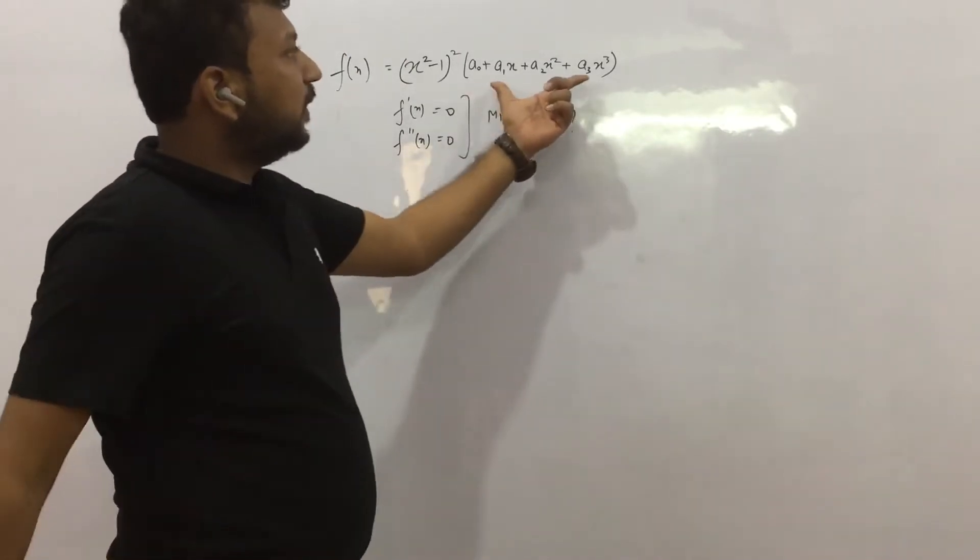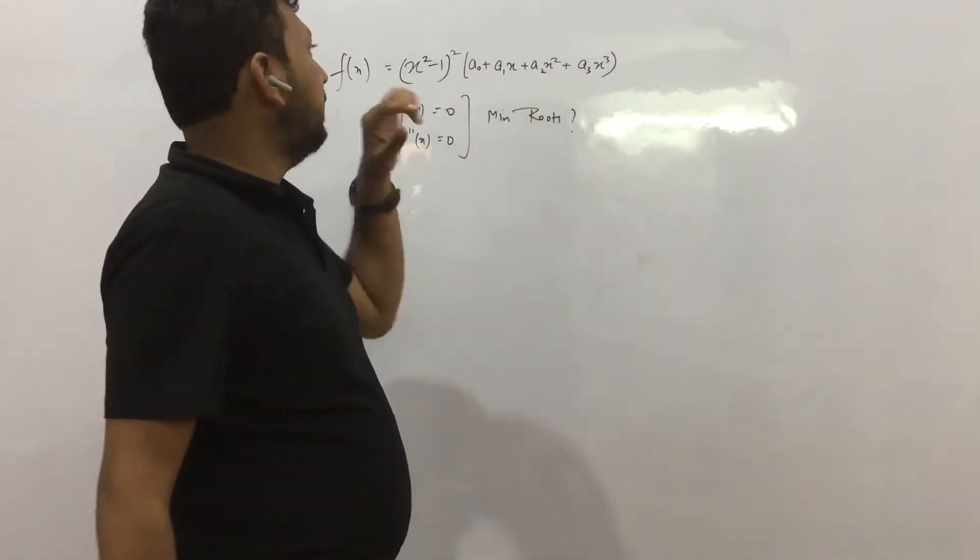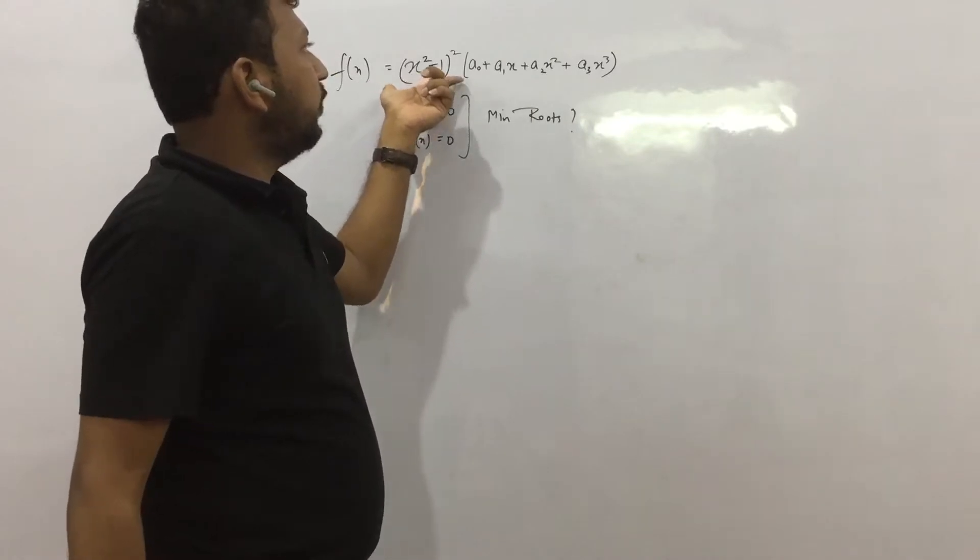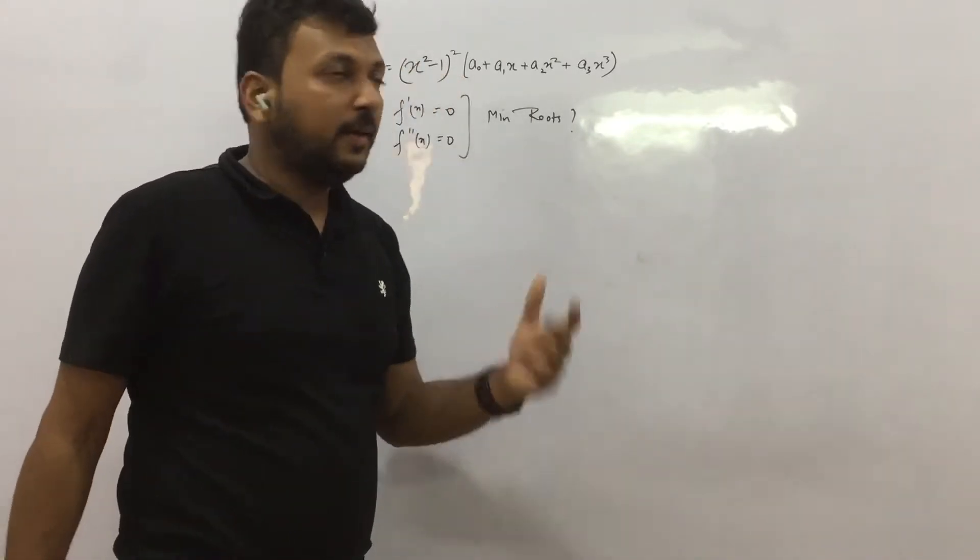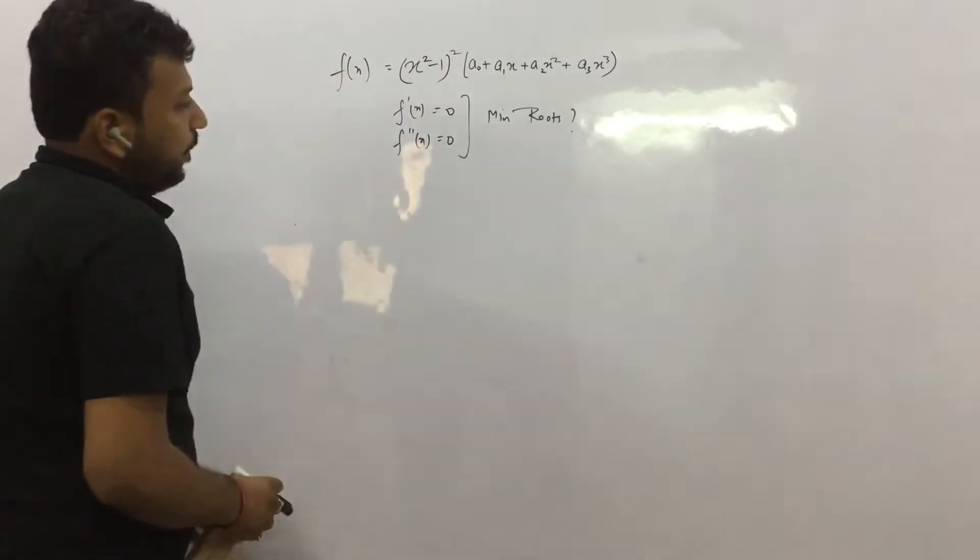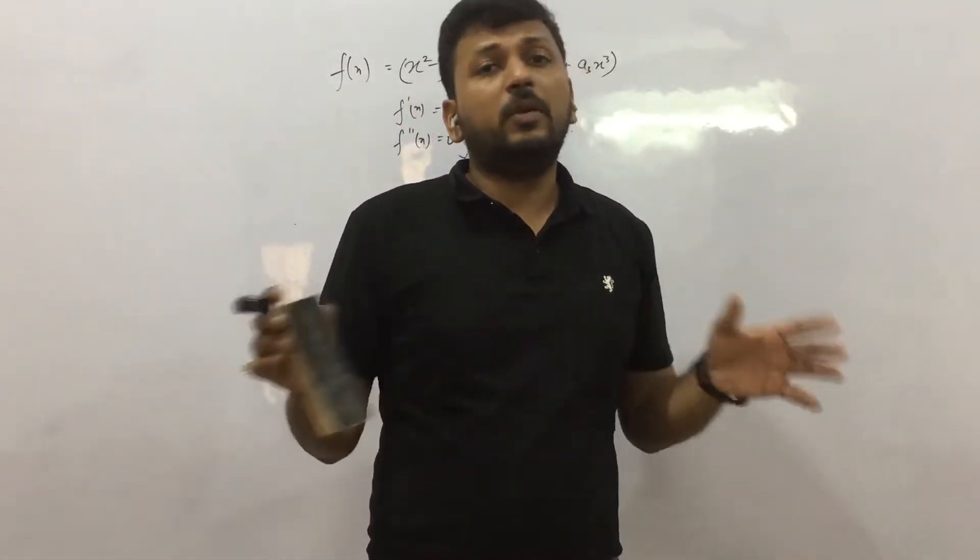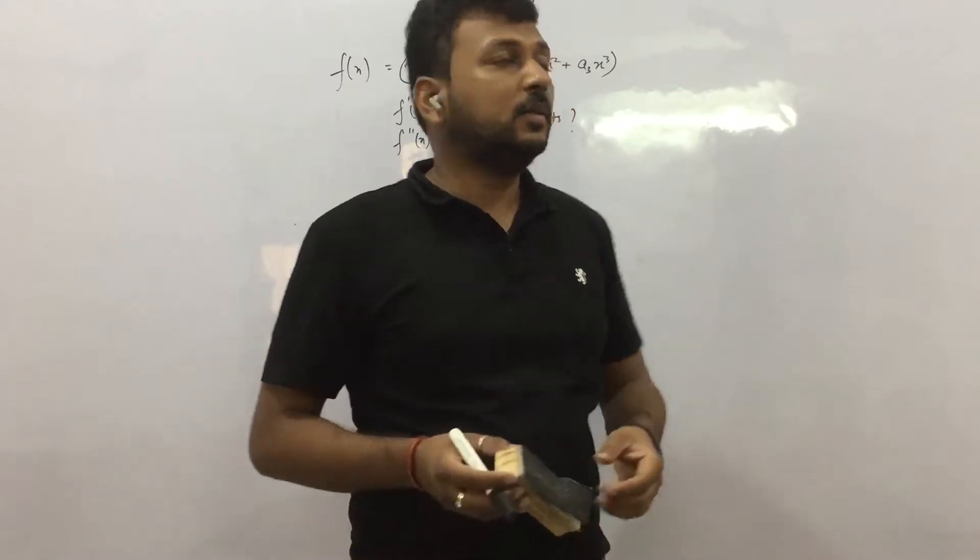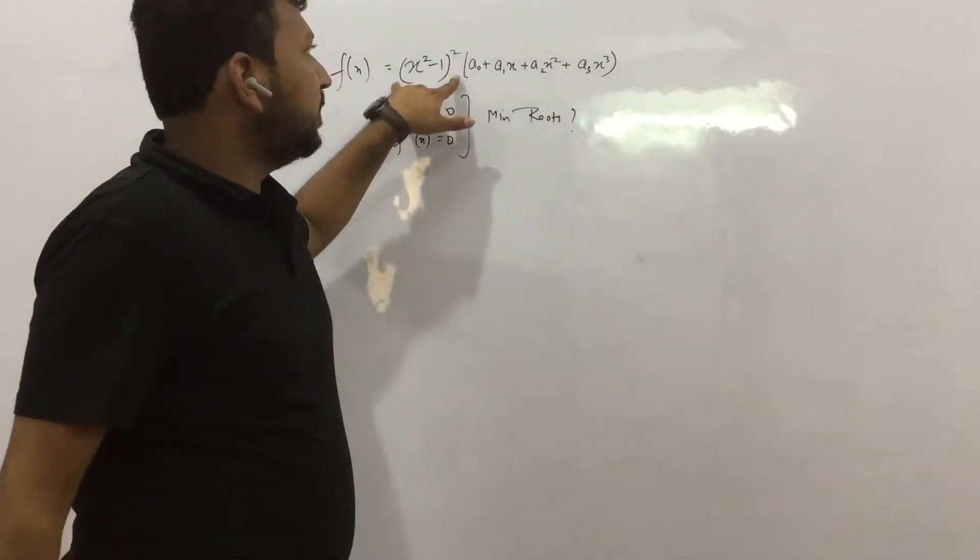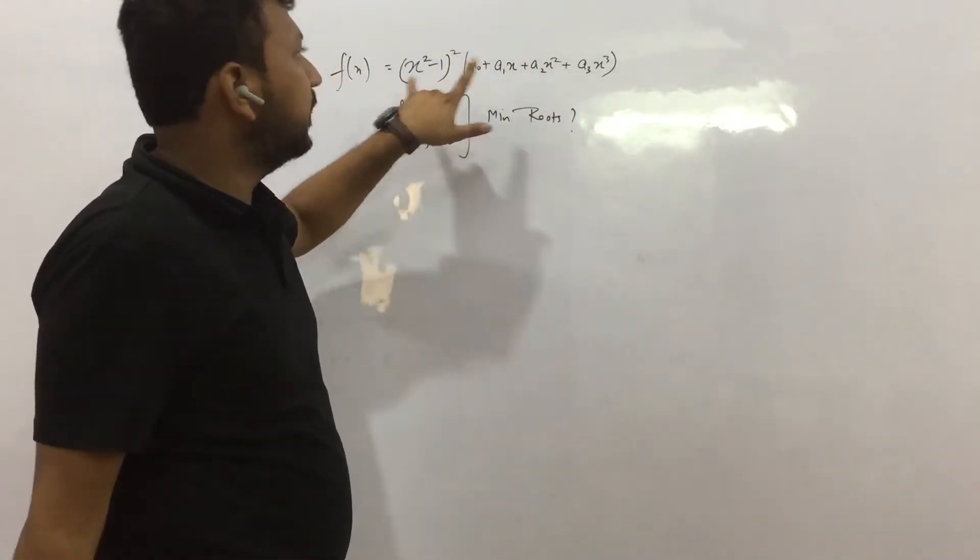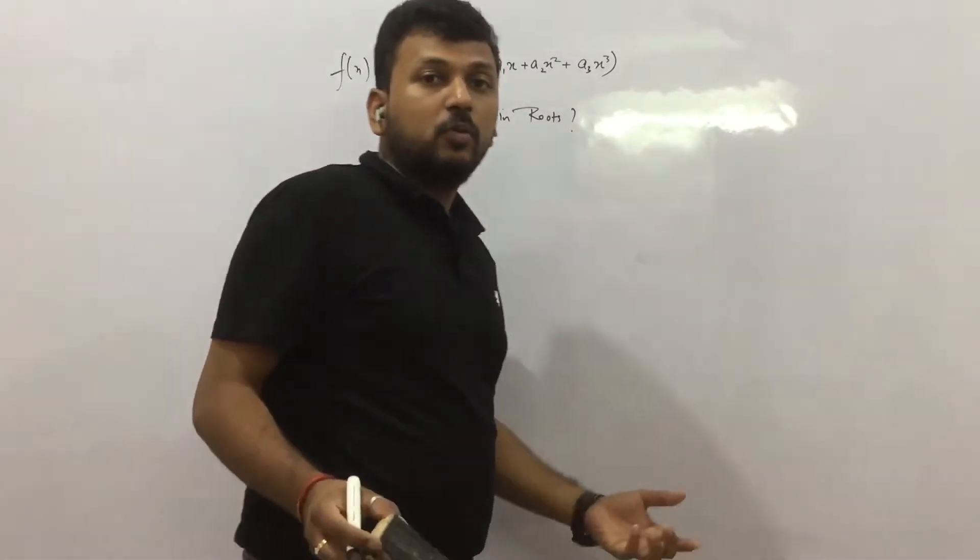So we need to find the minimum number of roots for that. First of all, understand this is a general expression that we have given. So maybe this is the specific part we have to be using. Now this is one hint from the question that we get. In mathematics you need to get different hints, then only you can get the answer. So this is one hint - this is a specific part you need to take care of. This is a general expression. Second is minimum number of roots.